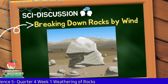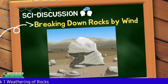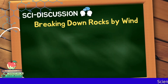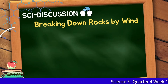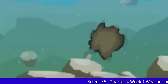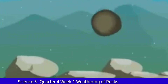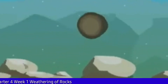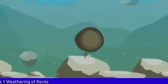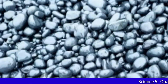Breaking down of rocks by wind: As the wind blows, it carries sand or small particles that scratch the rock surface. This can bring about mechanical or physical weathering which can result in different rock formations.